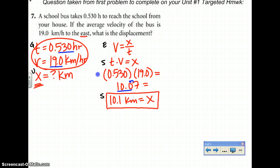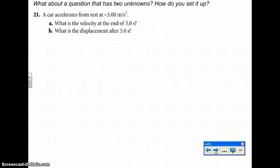I'm going to skip around a little bit just to show you some other problems that are related to your targeted homework. What about a question that has two unknowns? How do you set that one up? Well, you're not going to have to rewrite the givens again. The only thing that's going to be different is you're going to have to write down two unknowns, two equations, and two final answers pretty much. Looking at this one, which is question number 21: a car accelerates from rest at negative 3.00 meters per second squared.